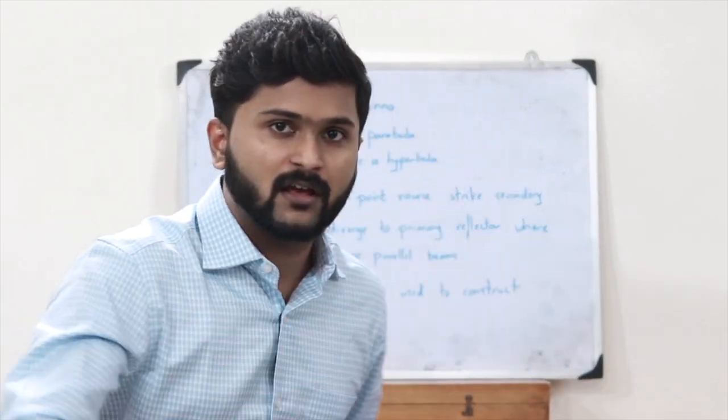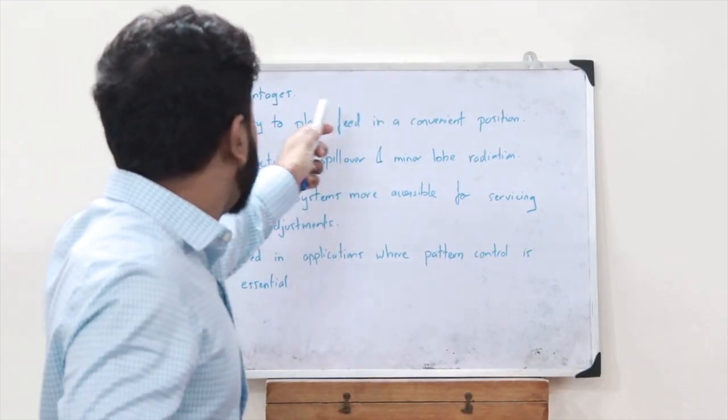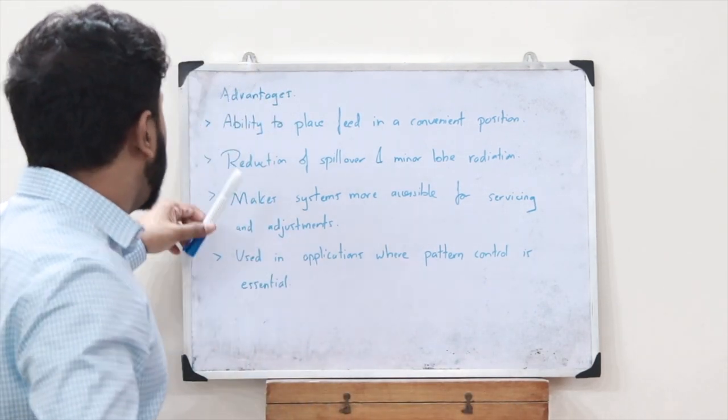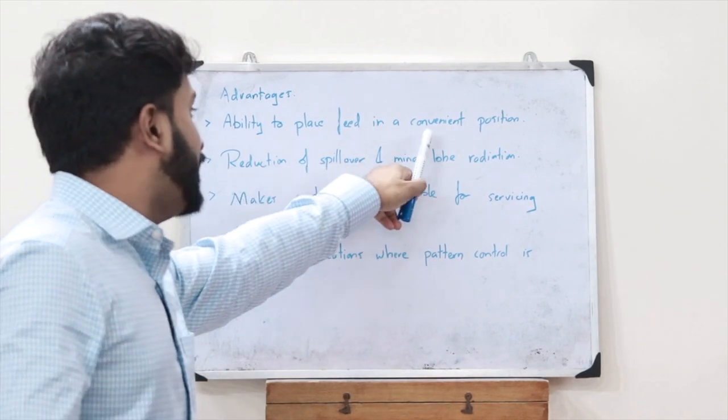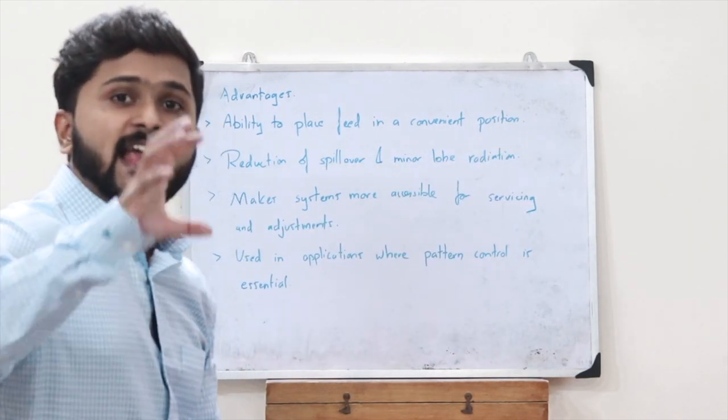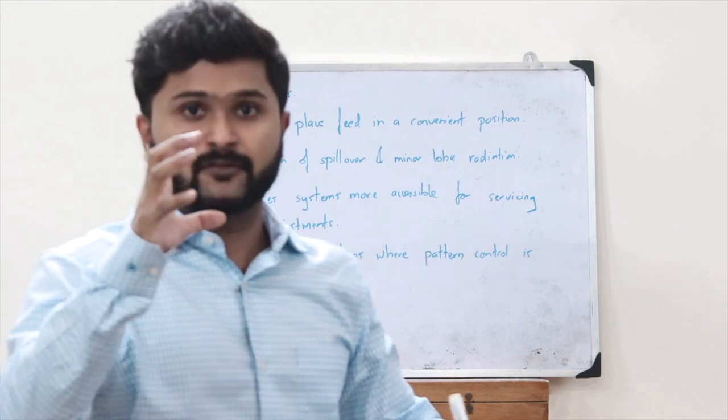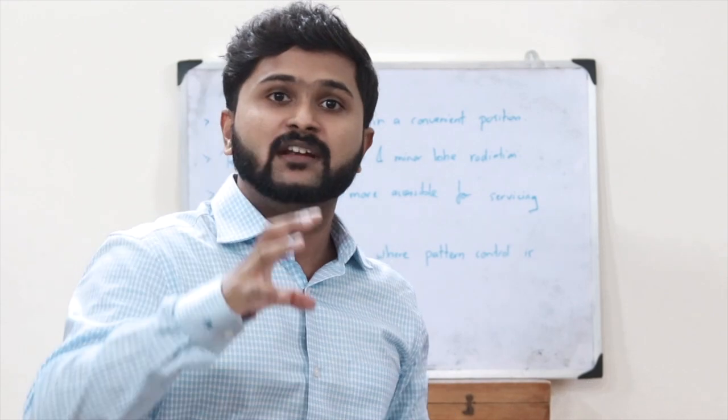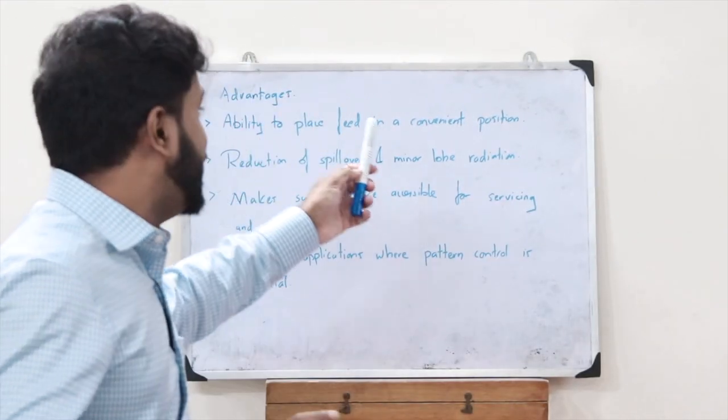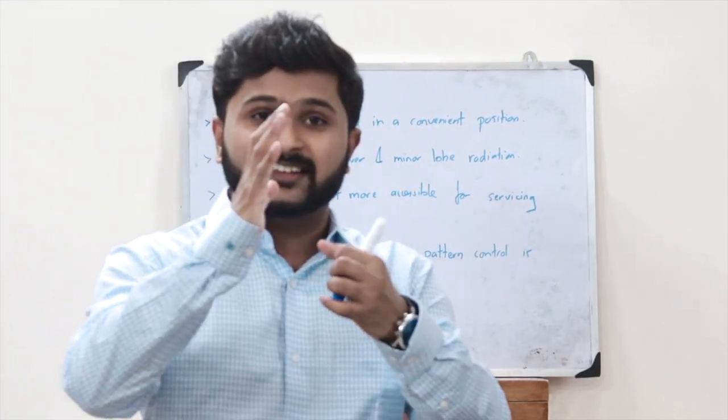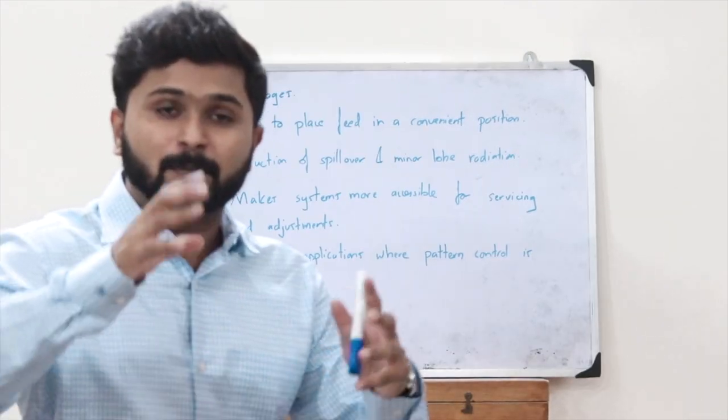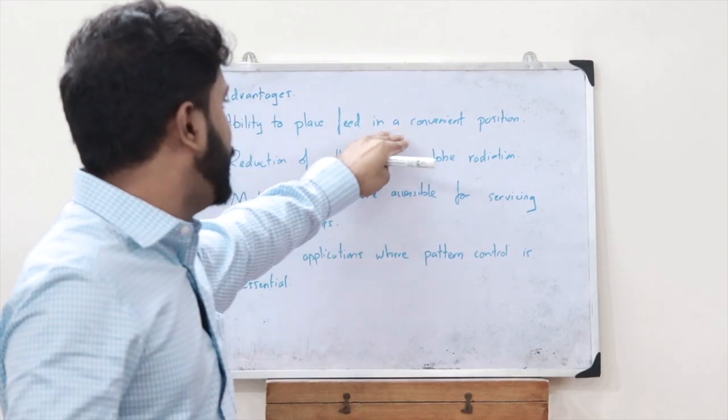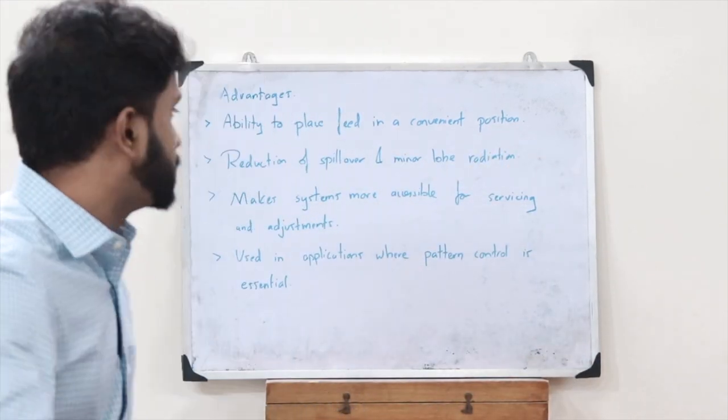Here are the advantages of using a Cassegrain reflector antenna. First is the ability to place the feed in a convenient position. In a parabolic dish reflector antenna, we had to place the feed in front of the antenna, but here the feed is placed in the vertex of the primary reflector. Second is the reduction of spillover and minor lobe radiation.